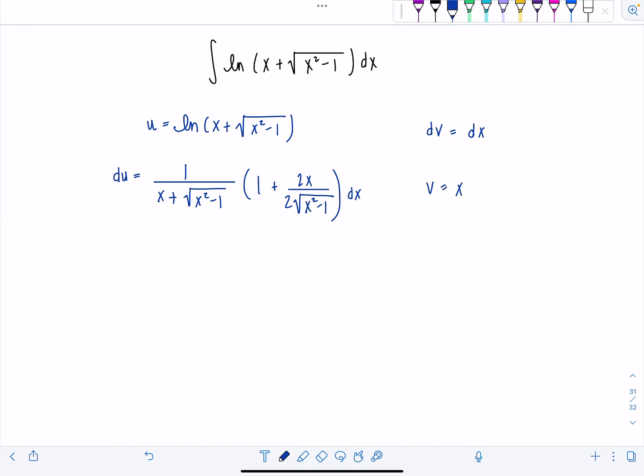All right. I mean, this looks quite messy. Maybe I need to clean up du a little bit before we start trying to integrate. That's a good idea. So we have 1 plus, these 2s are going to cancel. So this is just x over rad x squared minus 1 over x plus rad x squared minus 1 dx.